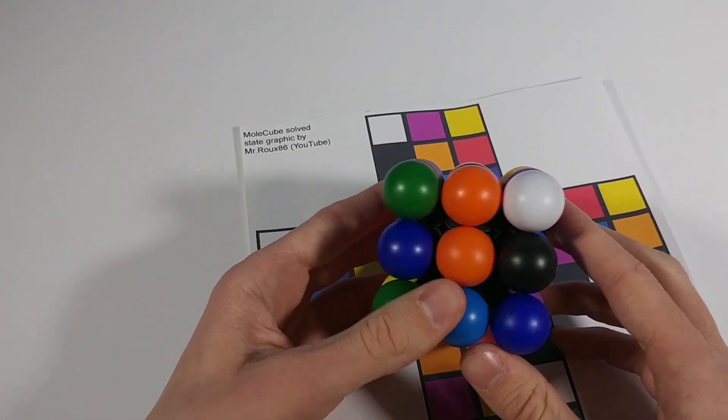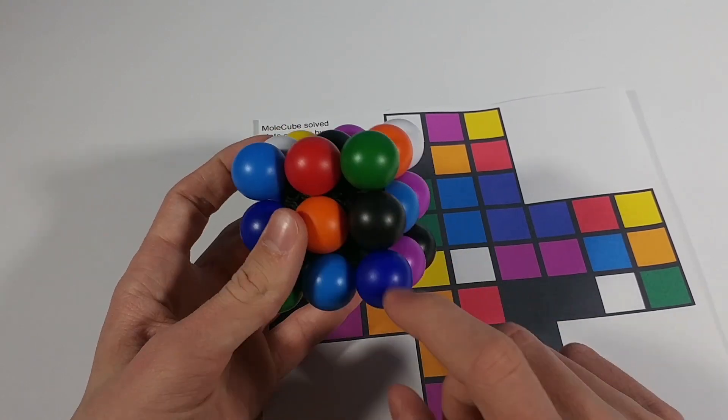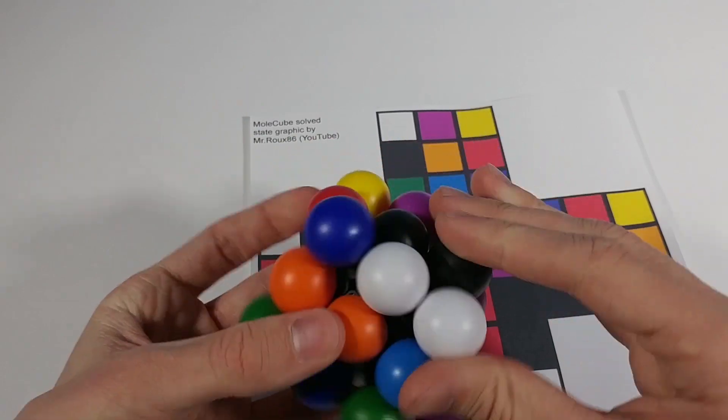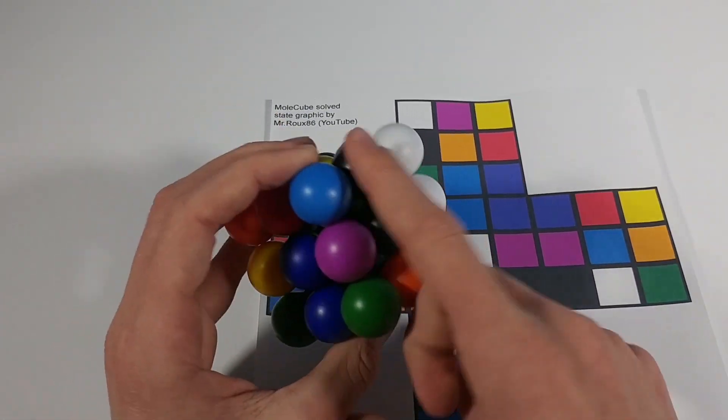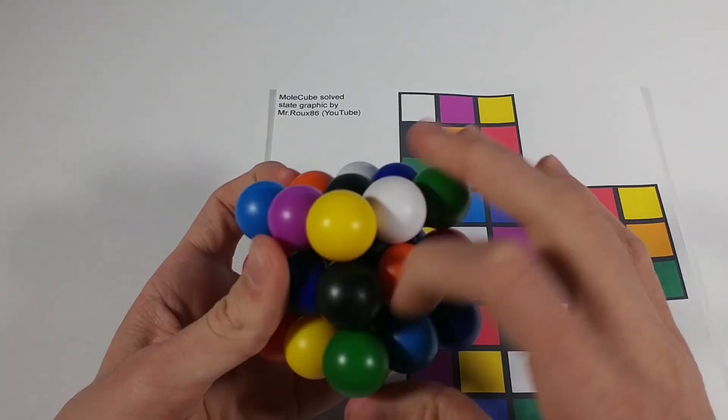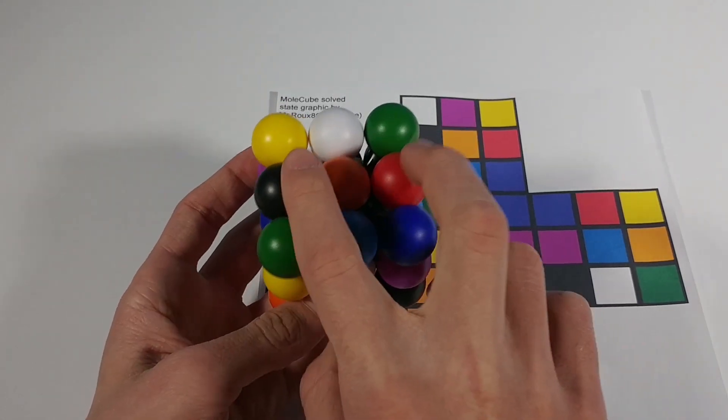All right. And then I can go ahead and put my red piece into here. So I line up the corner edge like the beginners method and insert that to solve. Then the black piece got kicked out so I can insert that as well.